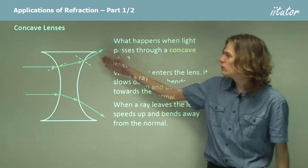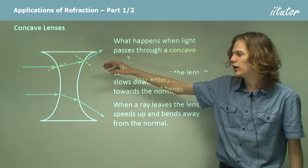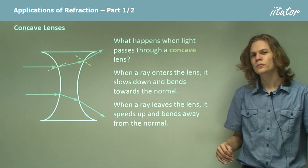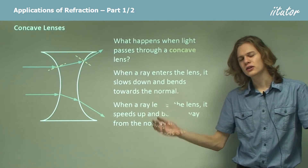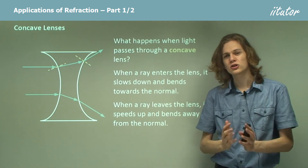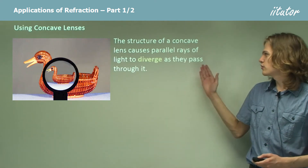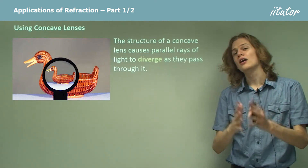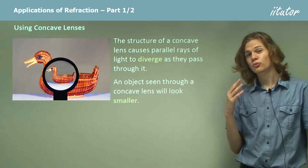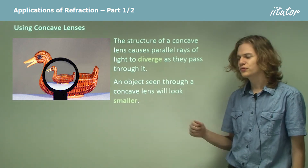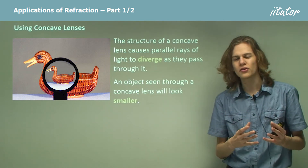But in both cases, because of the curve of the lens, the beam of light is always moving upward from the top ray or always moving downward from the bottom ray. This is why lenses are so useful — we can construct them so that the light will always be diverging or converging. Diverging means going apart; converging means coming together. The structure of a concave lens causes parallel rays of light to diverge as they pass through it, spreading out more. This means that if we look at an object through a concave lens, it will appear to be smaller, as we can see in this photograph.